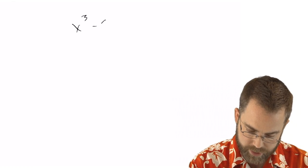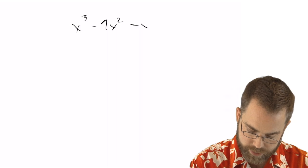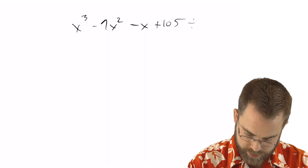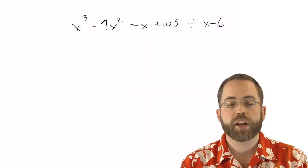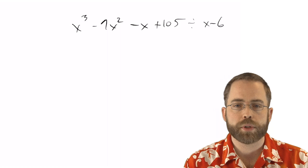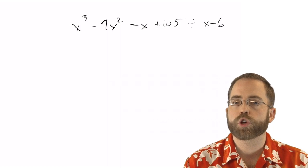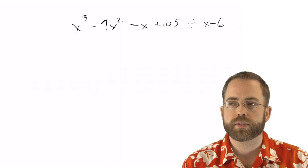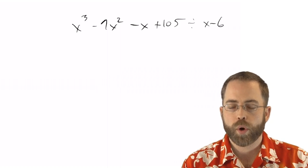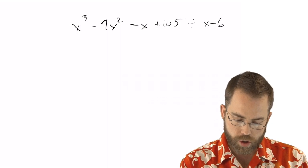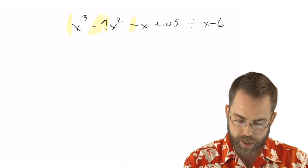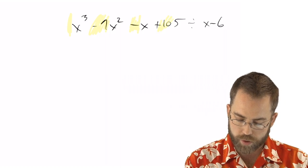So you remember last time we did x cubed minus 9x squared minus x plus 105, and we wanted to divide that by x minus 6. And you can do that the long way with polynomial long division, or you can do it the short way with synthetic division. Synthetic division is just a simplified process where you say, I'm going to take the coefficients off my polynomial, and there's a 1 there, and a negative 9 there, and a negative 1 there, and a 105 there.